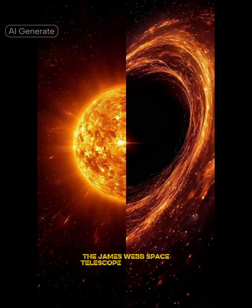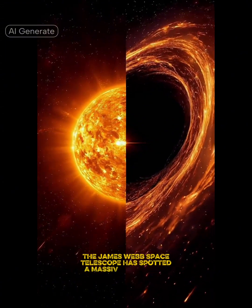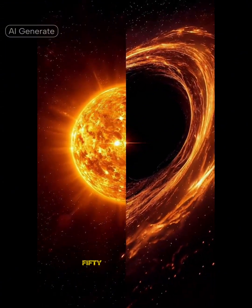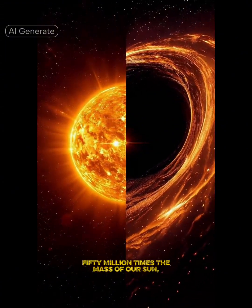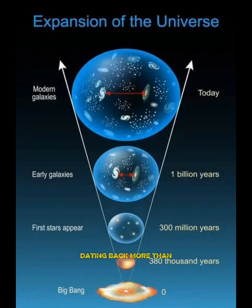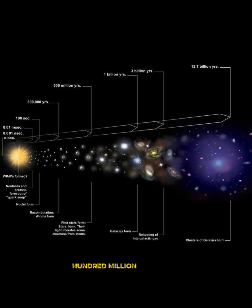The James Webb Space Telescope has spotted a massive primordial black hole, 50 million times the mass of our sun, dating back more than 13 billion years, when the universe was only 700 million years old.